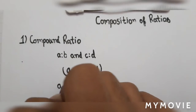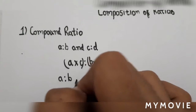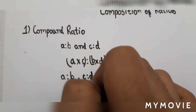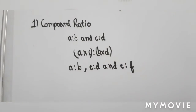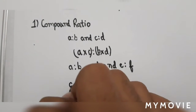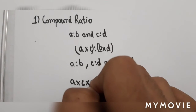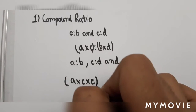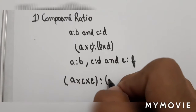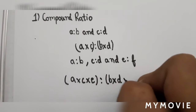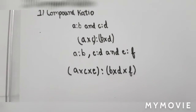One more example: if you are given with three ratios, then your answer would be A×C×E : B×D×F. So this is compound ratio.